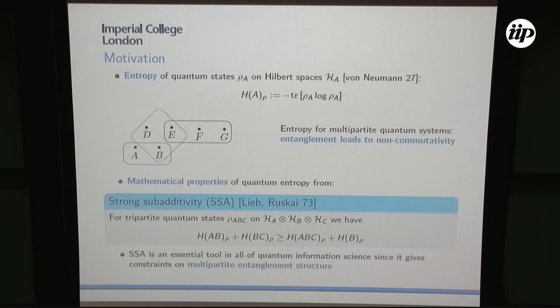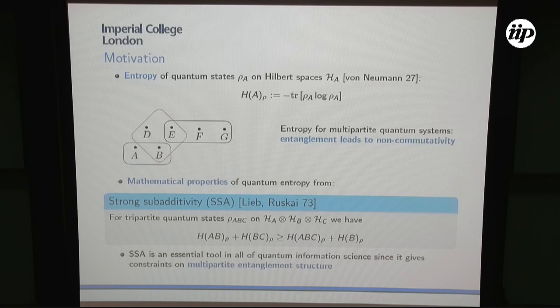Entropy shows up in all kinds of disciplines — even disciplines that are a priori not connected — such as statistical mechanics, thermodynamics, information theory, or even computer science, where entropy is often used as a proof tool because of its nice mathematical properties. So if you understand this mathematical structure, what properties of entropy hold not only in the classical case but in the quantum case, this will be useful for many applications. That's my motivation slide.